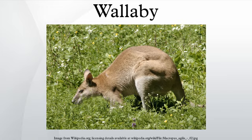Natural range and habitat: Wallabies are widely distributed across Australia, particularly in more remote, heavily timbered, or rugged areas, less so on the great semi-arid plains that are better suited to the larger, leaner, and more fleet-footed kangaroos. They also can be found on the island of New Guinea.